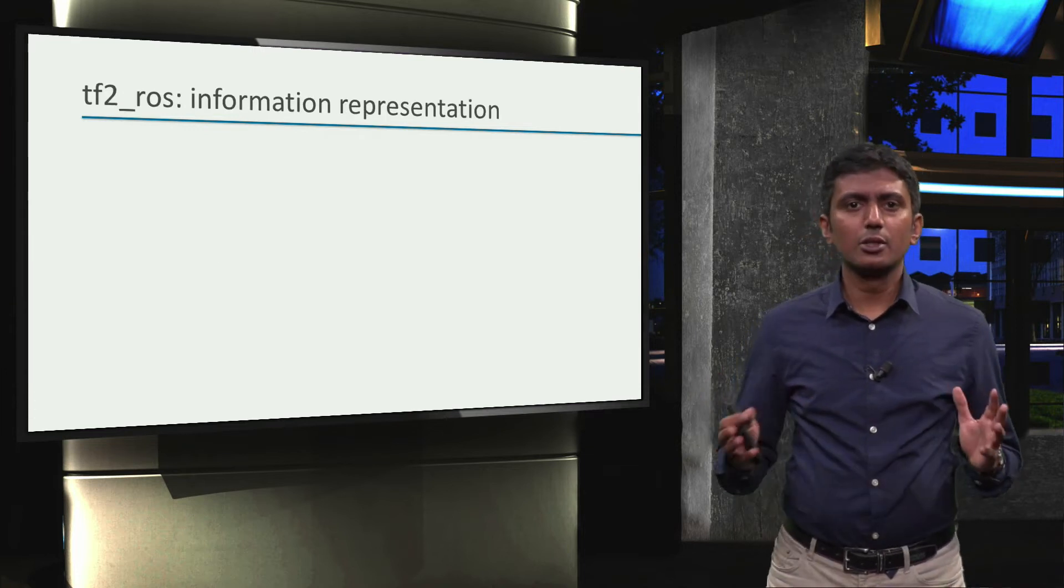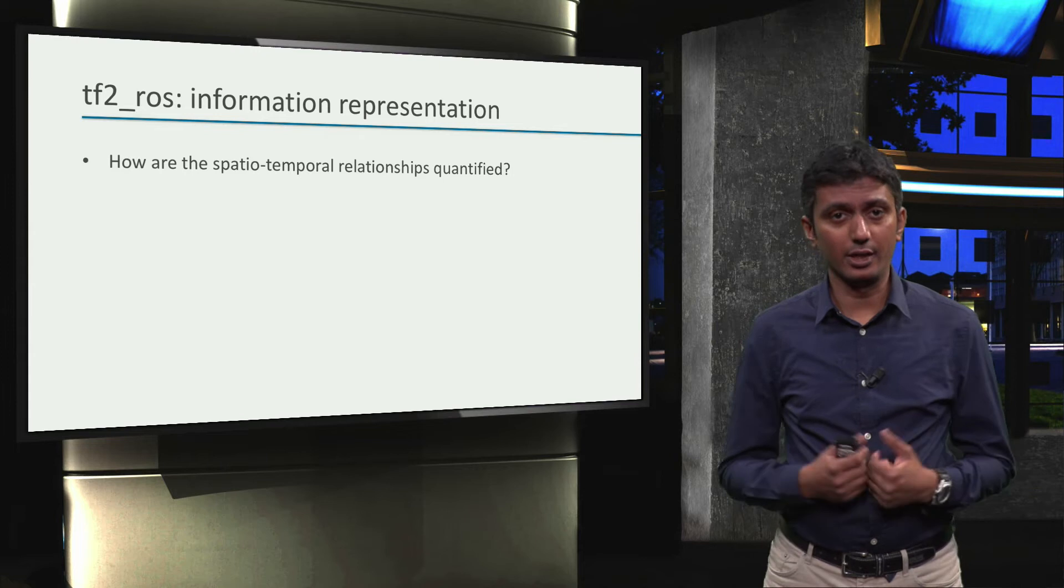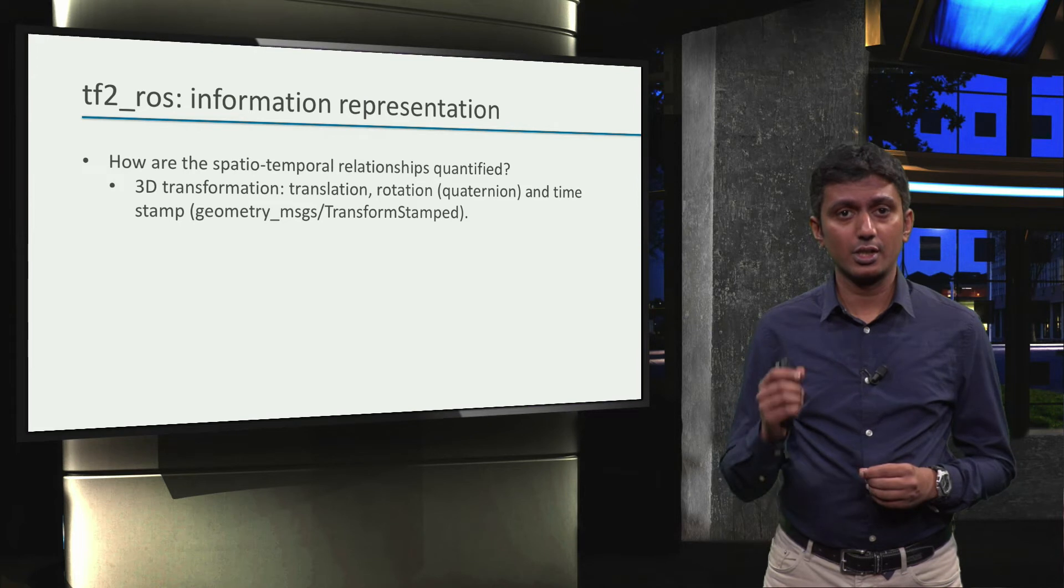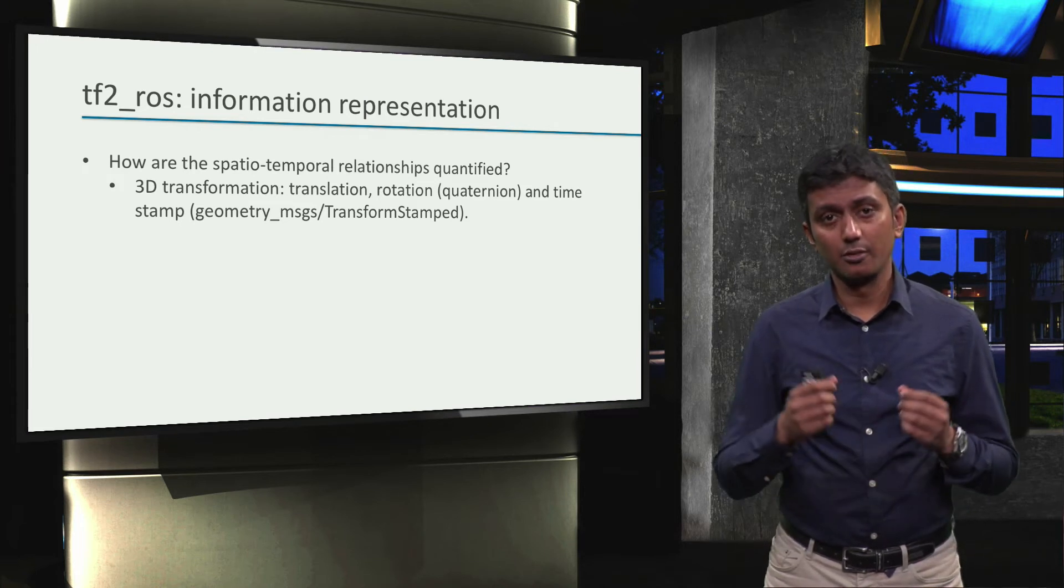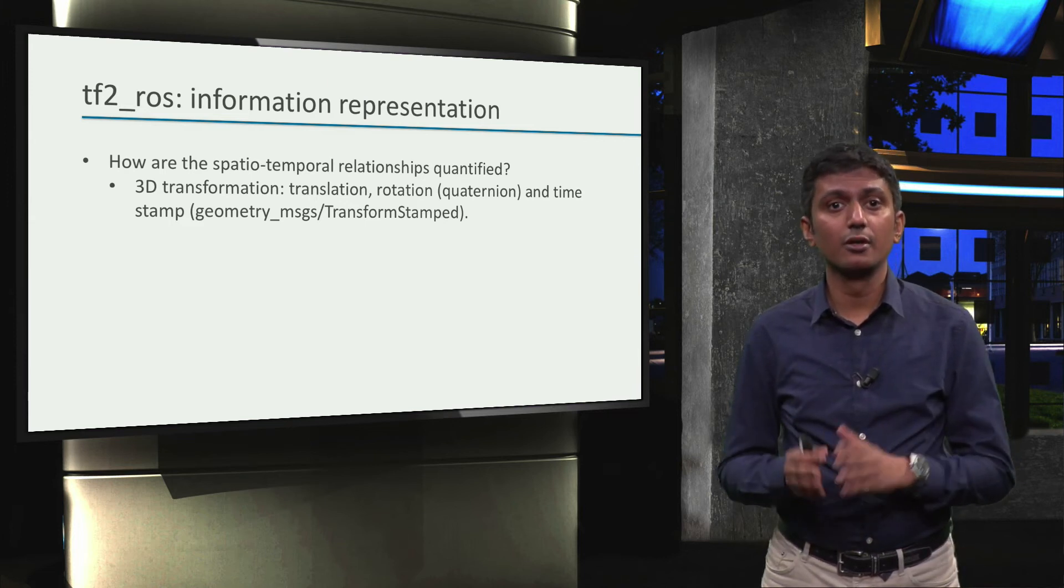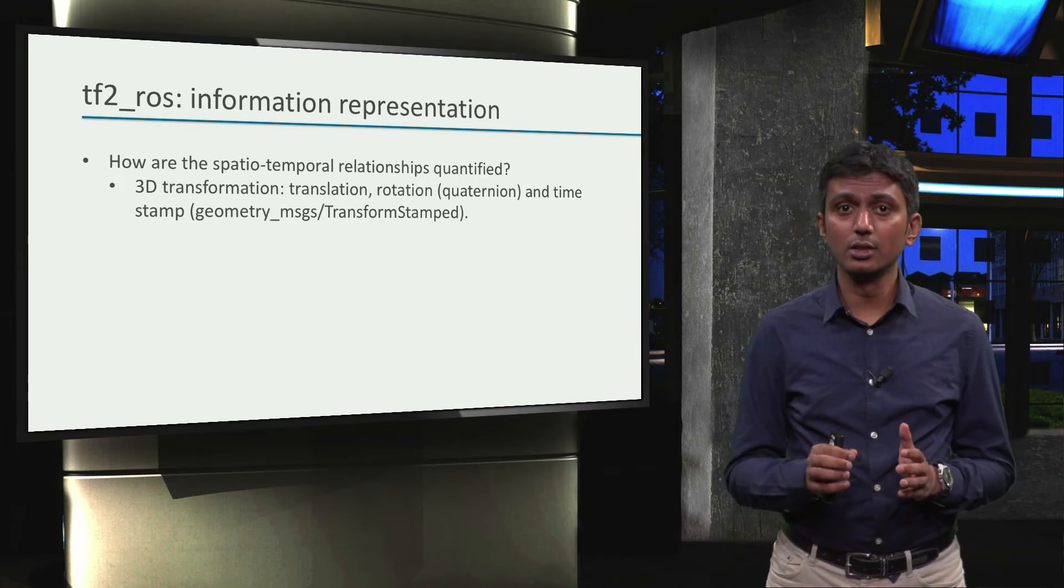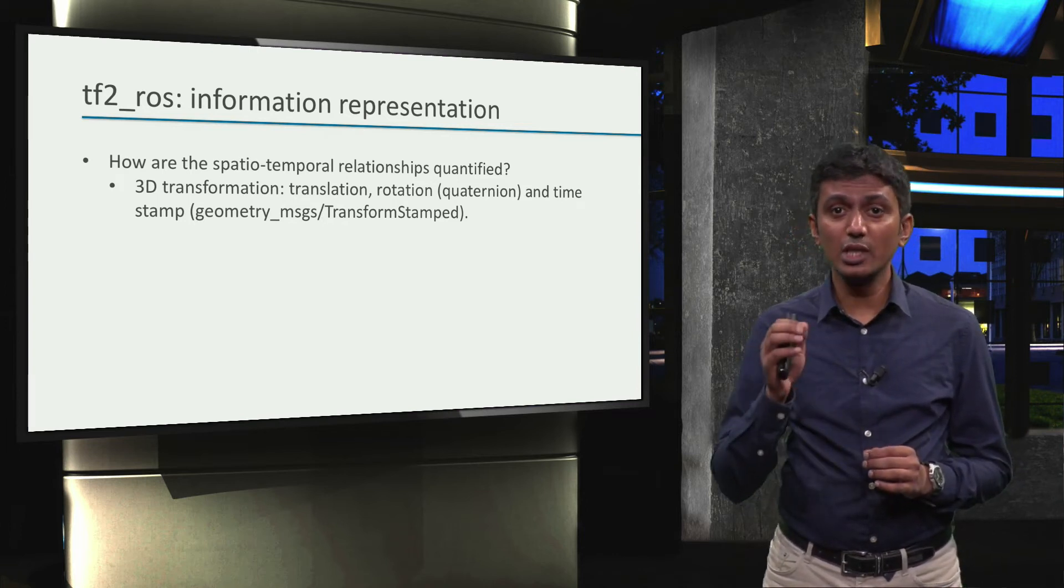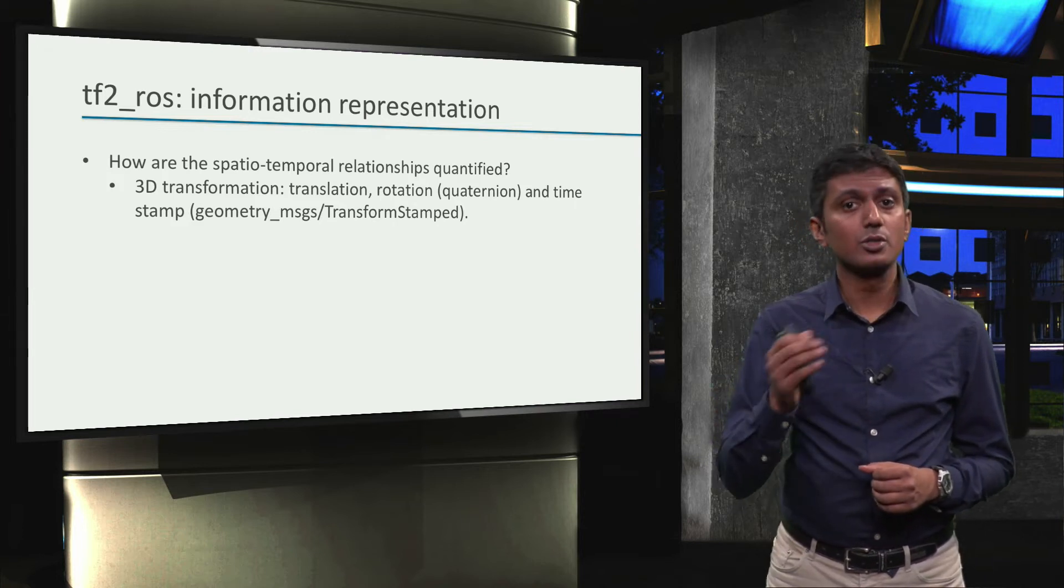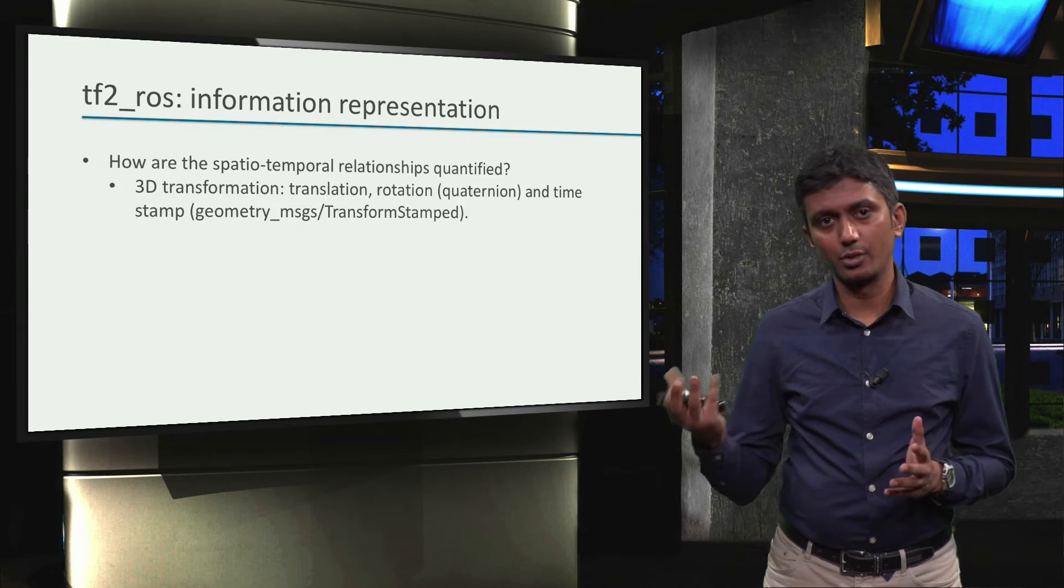So we have been talking about spatio-temporal relationships for a while now, but how are they actually quantified? They are quantified via the geometry_messages TransformStamped ROS message, which is a message type to represent 3D transformation. That is, it comprises of a field for 3D translation, 3D rotation in quaternion, so that rotations can be uniquely represented with respect to a given reference frame. Rotations in RPY are also supported for simplicity, but it is strongly recommended to use quaternions for computations involving rotations.